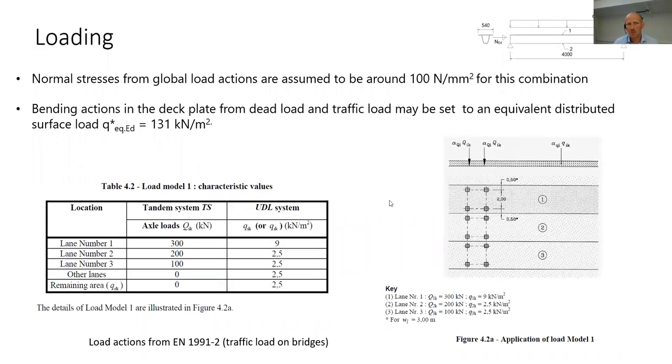The loading normal stress from global load action is assumed to be around 100 Newton per square millimeter. For this combination of local traffic loads and bending action in a deck plate from dead load and traffic, we set it to an equivalent distributed surface load equal to 131 kilonewtons per square meter. From the standard, you have to use local axle loads as shown here, but we set it to an equivalent distributed surface load. That's explained more clearly in the paper.